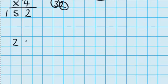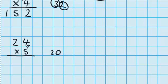Let's set this one out straight away in standard written form: 24 times 5. Sometimes you'll hear people talking about standard written form as an algorithm — it's exactly the same thing. Just like last time, I need to work out what 5 groups of 4 would be, and we know the answer is 20. You can see that 20 is made up of no ones and 2 tens, so I'm going to put my zero ones in here. And I'm going to carry my 2 up here — that represents the 2 tens, because this is the tens column.